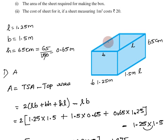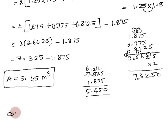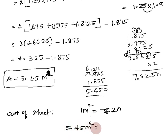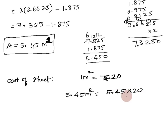Now for the cost of the sheet. Given that 1 square meter costs 20 rupees, and we need 5.45 square meters, the cost of sheet = 5.45 × 20 rupees. We move the decimal point: 54.5 × 2.